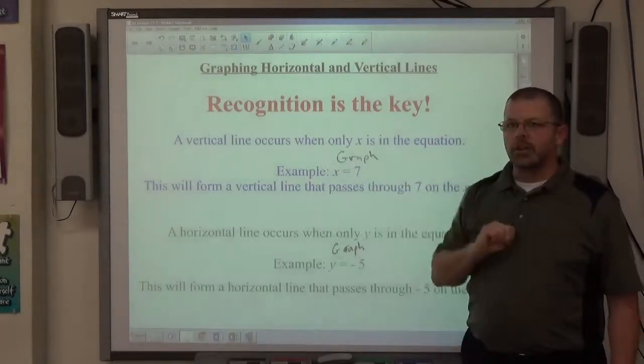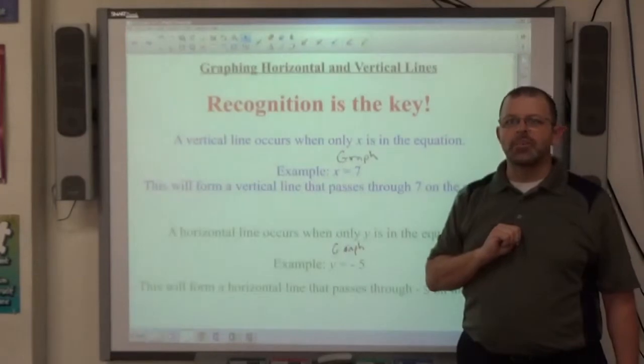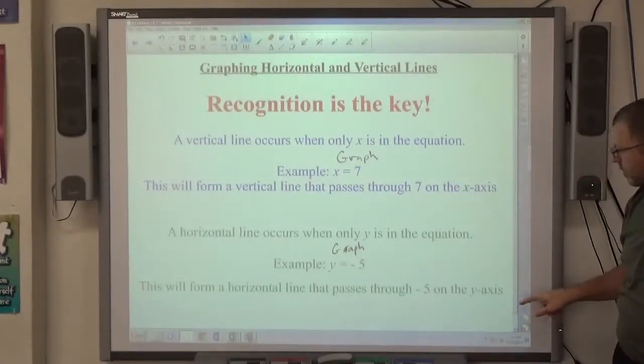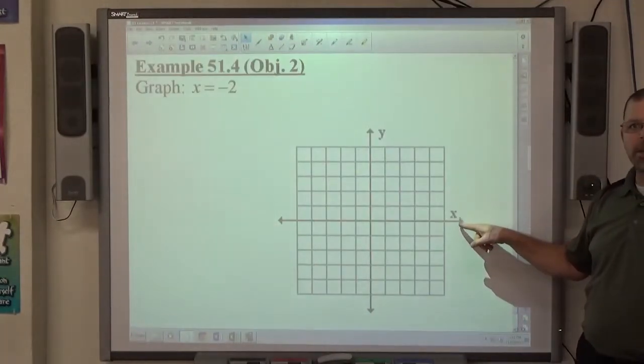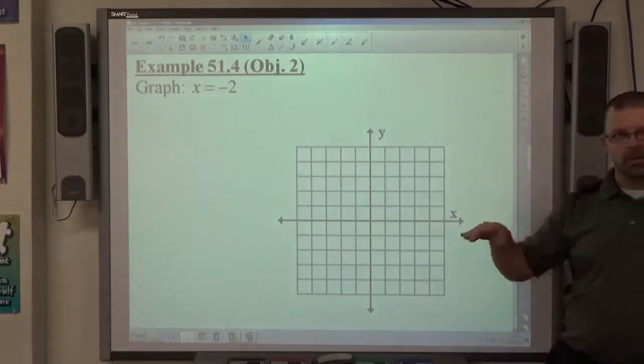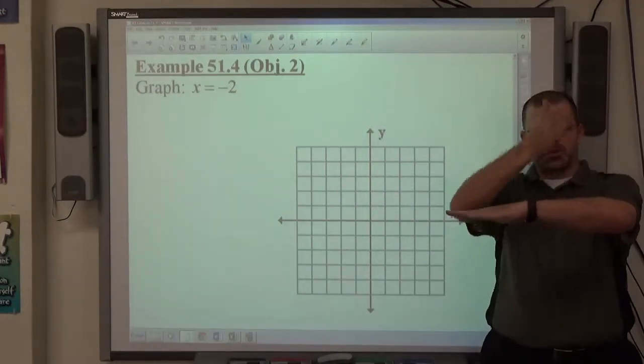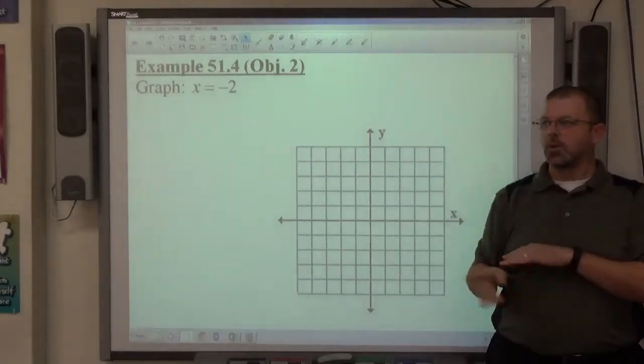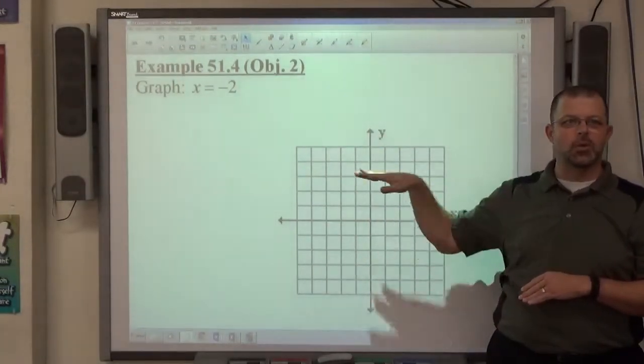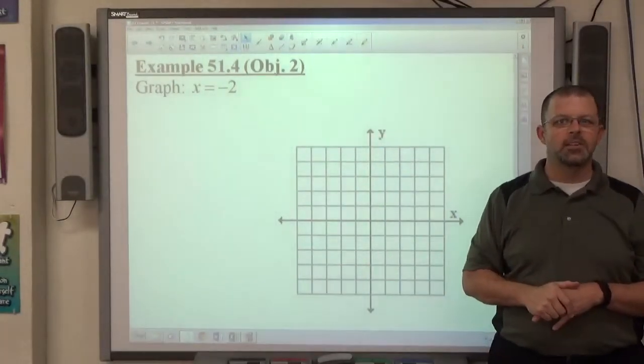If x equals a number, you get a vertical line. Here's what messes people up: Which way is the x-axis going? Horizontally. But x equals creates a vertical line. Y goes vertically and y equals makes a horizontal line.